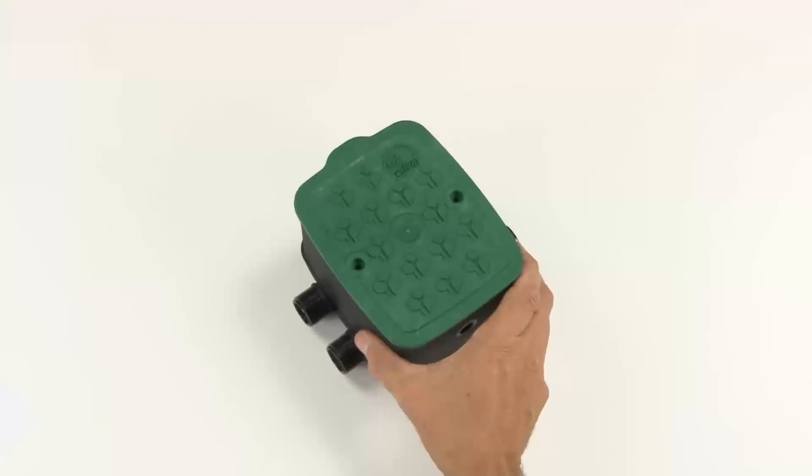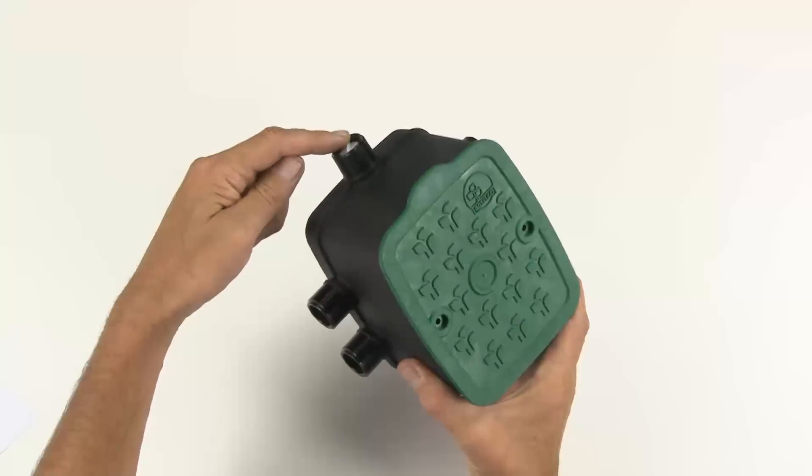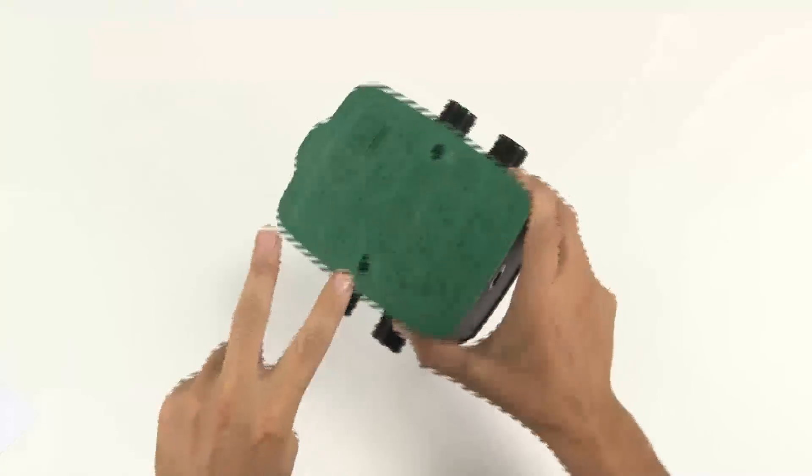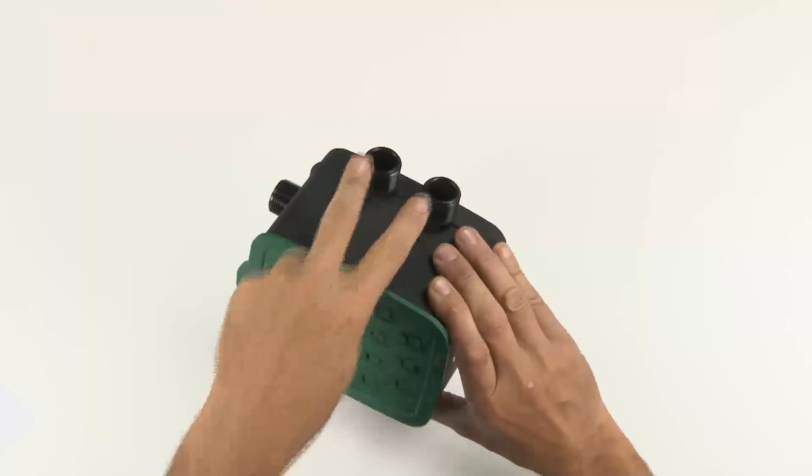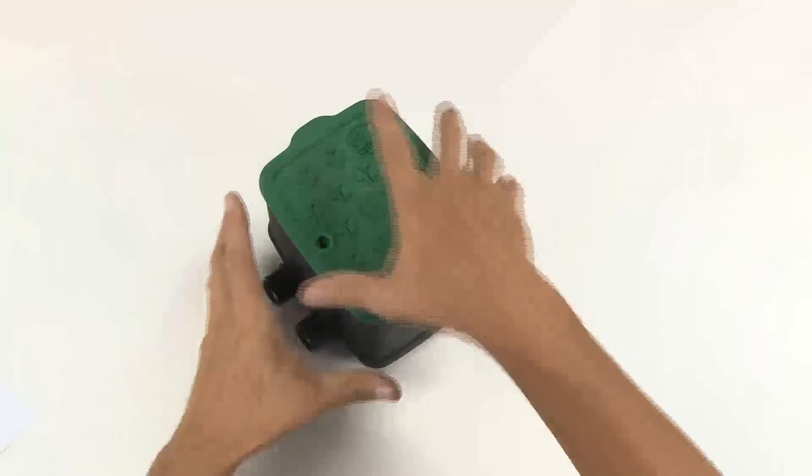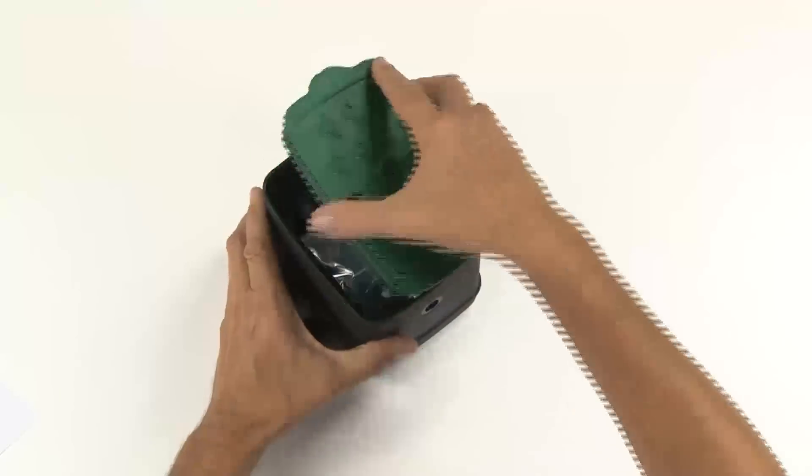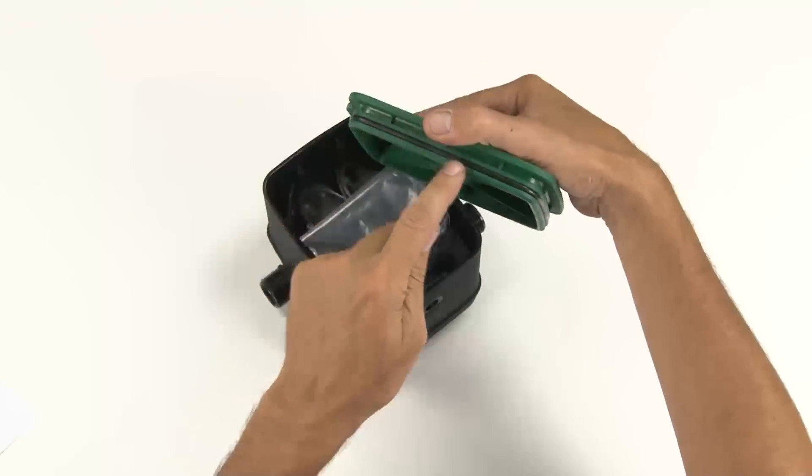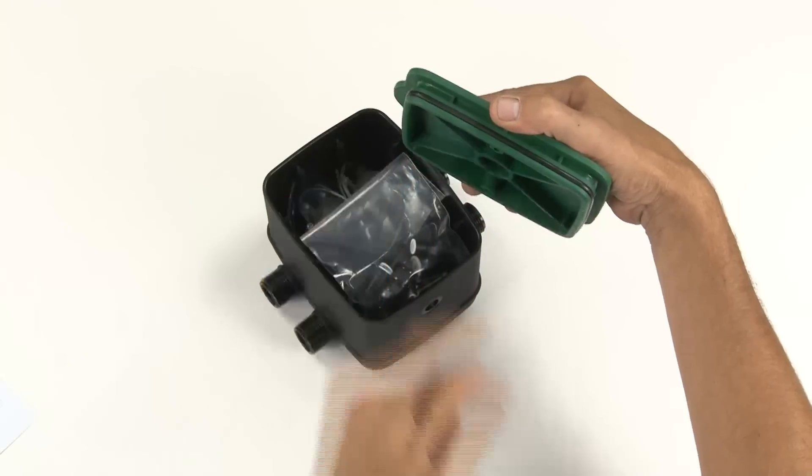This is your EasyValve 4. Here's the inlet for your main water connection and either side has two outlets for connecting your irrigation hoses. As you take off the lid, you'll see the O-ring that seals the product and keeps out dust, water and insects.